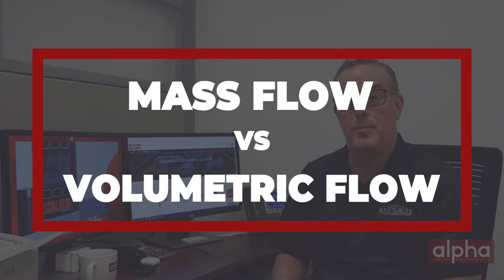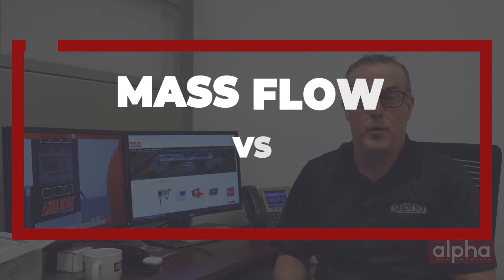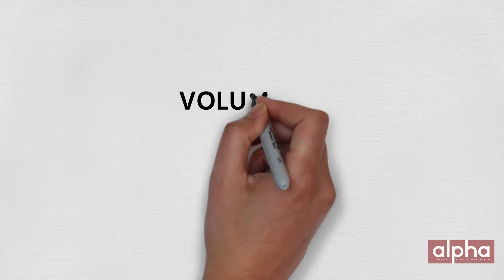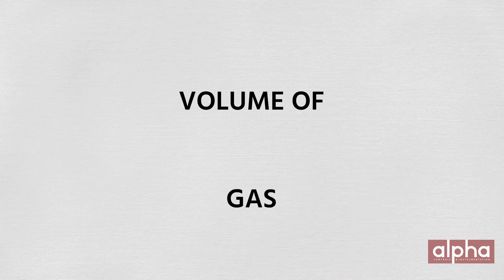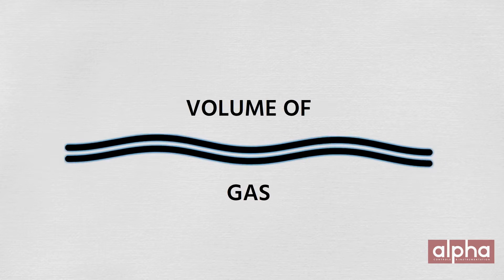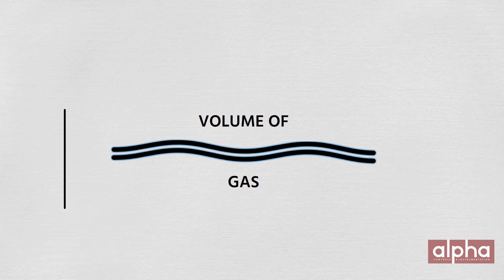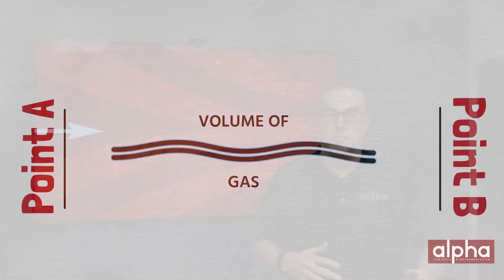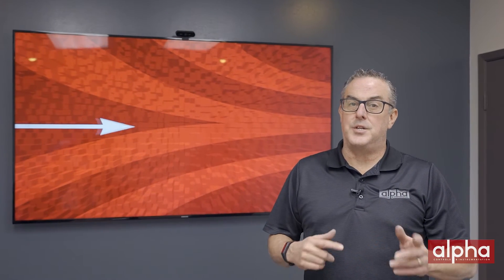Let's start with the difference between mass flow and volumetric. Volumetric flow is the volume of gas that passes in a period of time. This is measured in liters per minute or CFM, but one thing to always remember is any changes in temperature and pressure will affect the readings.